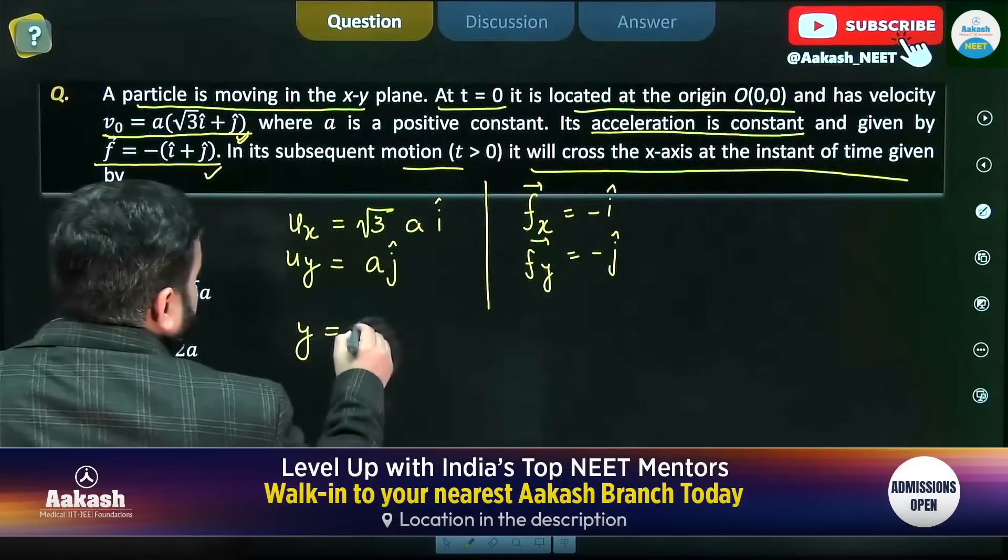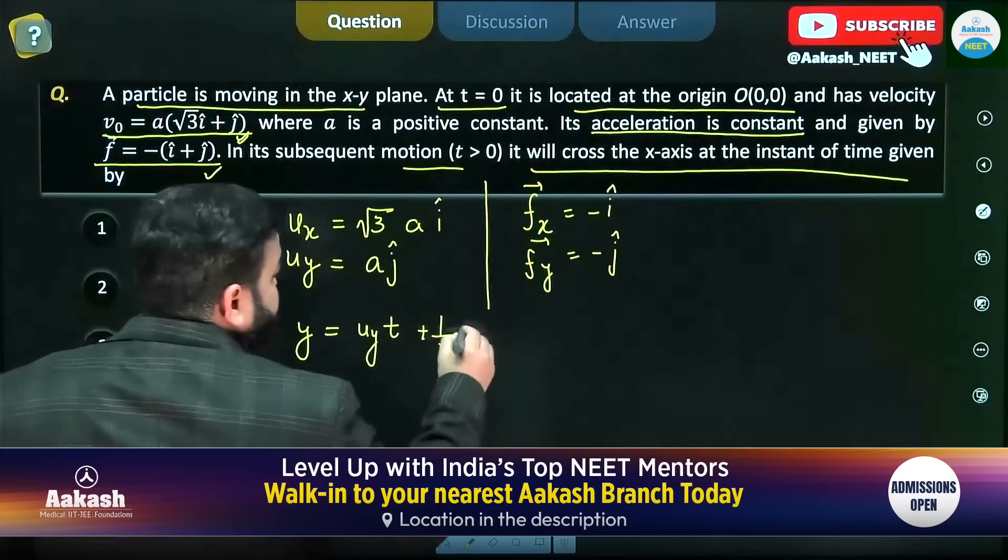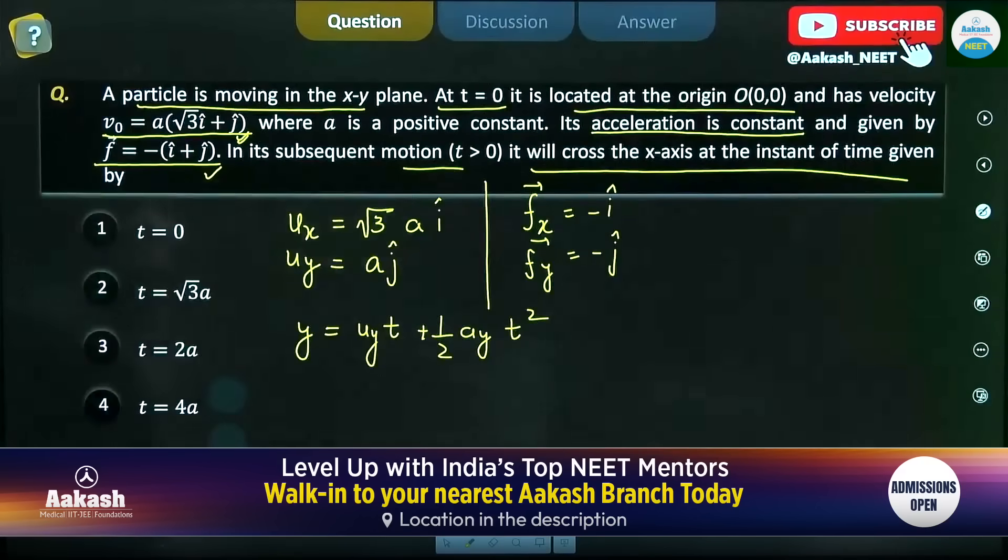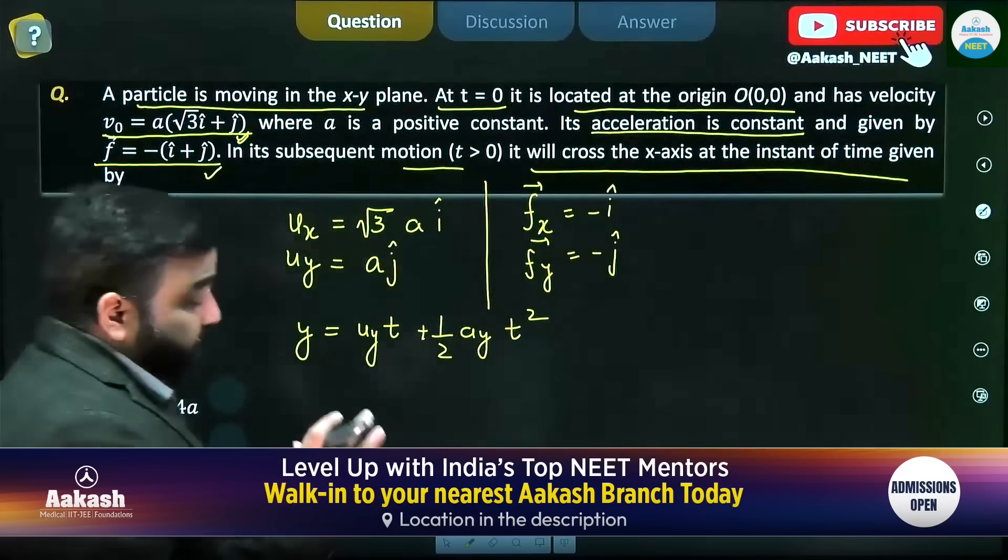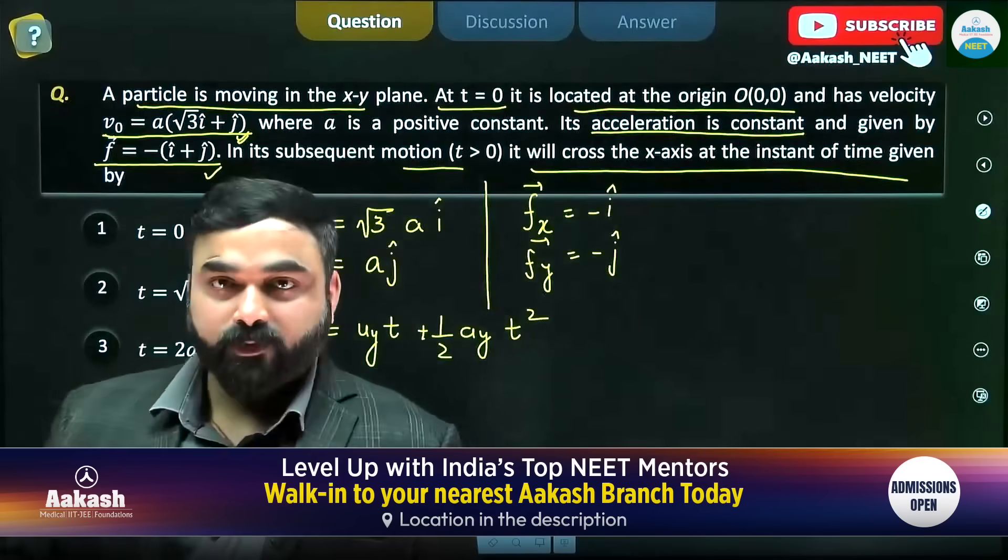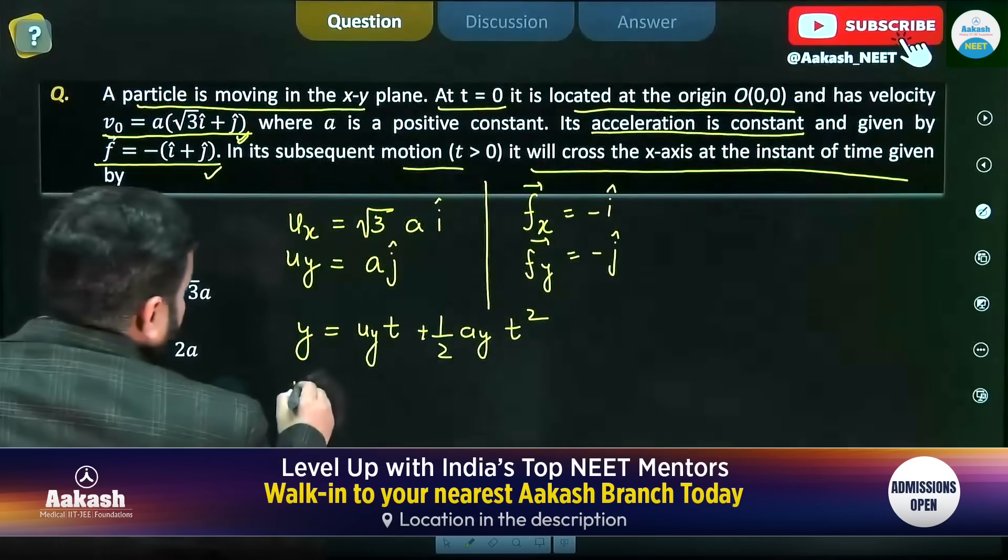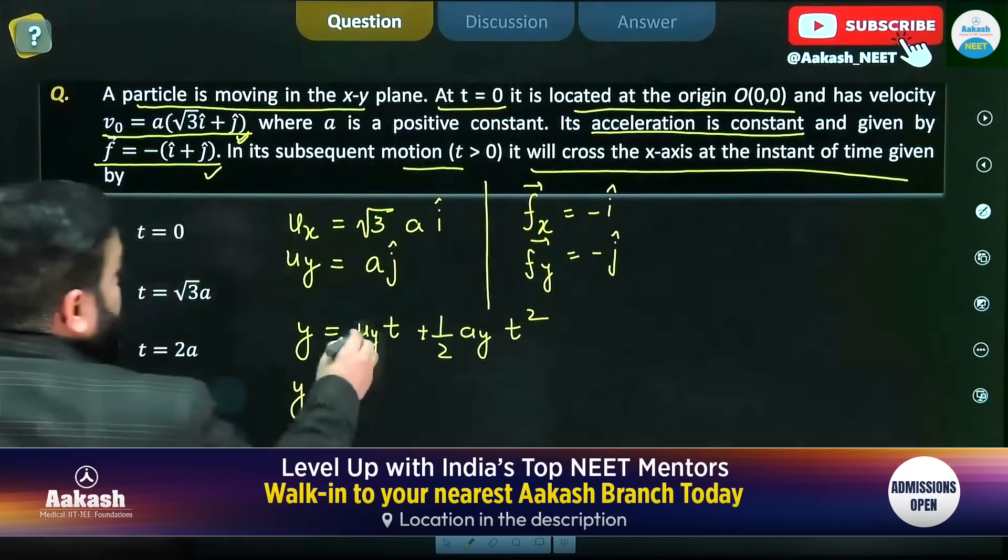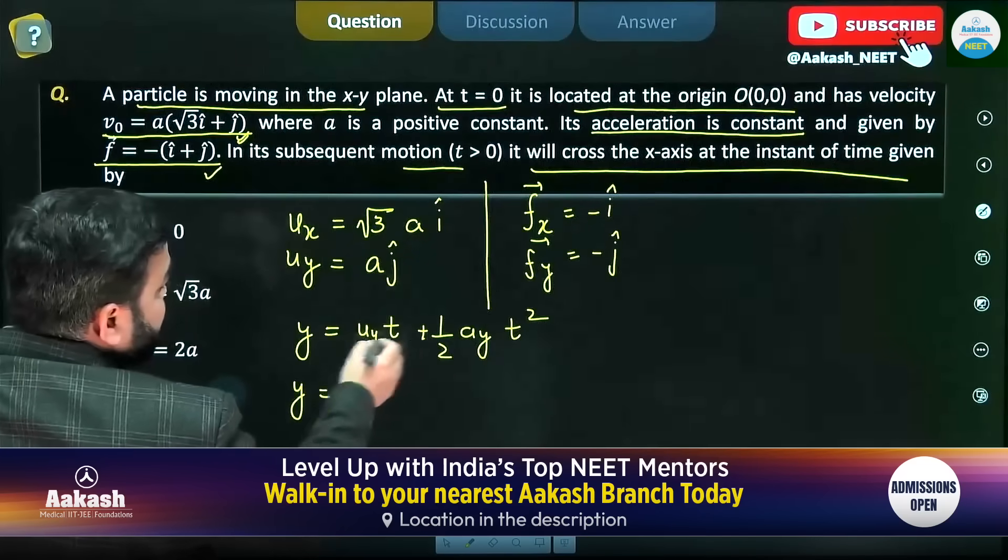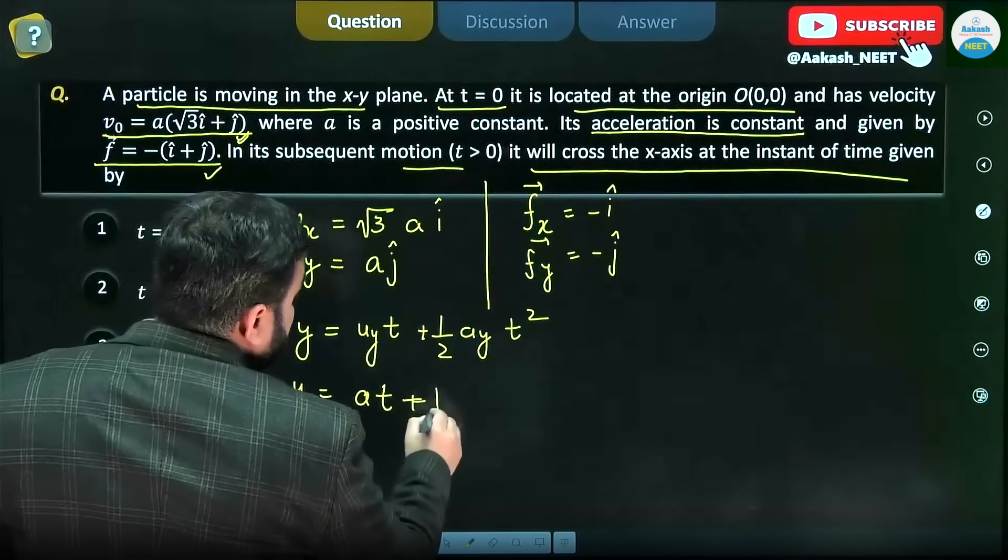So we know y = uᵧt + ½aᵧt². We are considering t to be the instant at which the particle is crossing the x-axis. Now, y here is equal to... aᵧ here is a, we are considering the magnitude, so this will be at + ½...